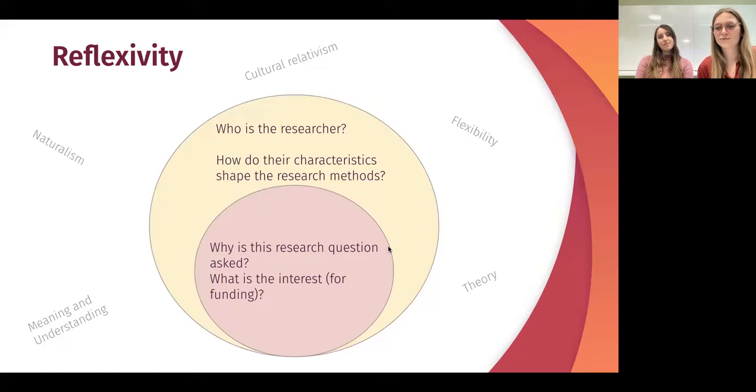How do those characteristics of a researcher shape the research methodology or certain decisions made during the research process? This dimension also deals with interviewer bias or respondent biases that might be introduced. So what is the complex interaction or relationship between a researcher and participants in the research study?